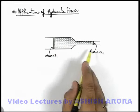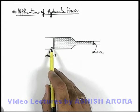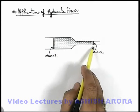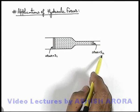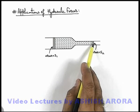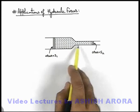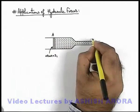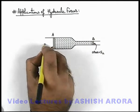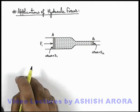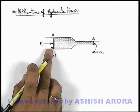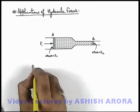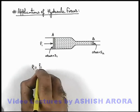Here we can see a tube. On one side of the tube there is a piston fitted into it having cross-sectional area S1, and the other side of the tube has a cross-sectional area S2, which is also fitted with another piston. A fluid is filled between the two pistons. Say this is piston A and this is piston B. We apply a force F1 on piston A. The pressure applied on the fluid from the left-hand side will be P1, which can be written as F1 divided by S1.